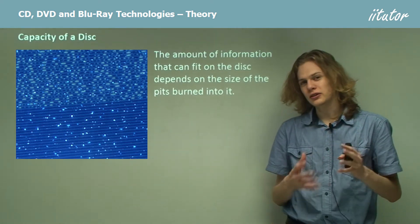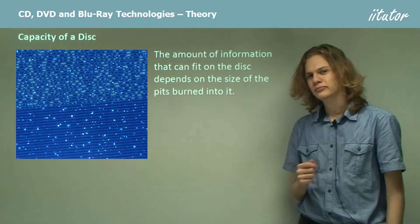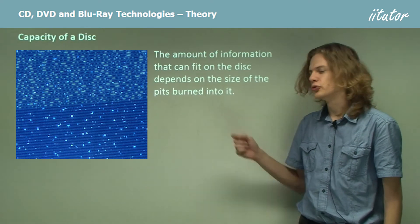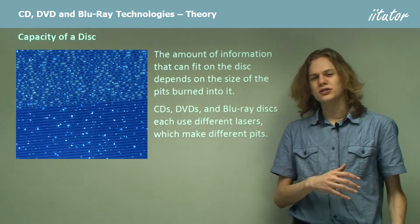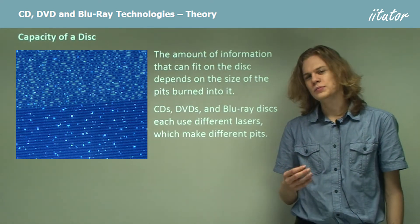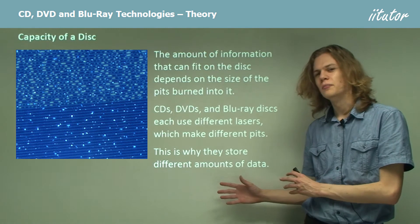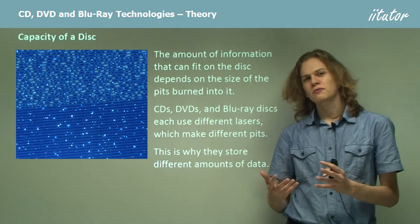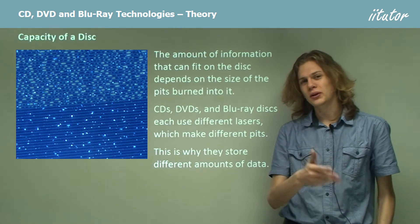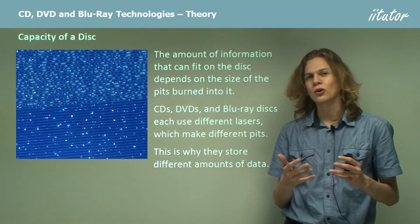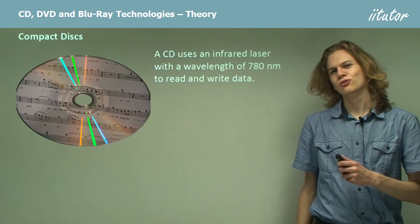The amount of data that we can fit onto a disk depends on the number of pits and not-pits we can have on it. We have a close-up of a CD over here and we can see lots of little dots representing each pit. CDs, DVDs and Blu-ray disks all use a different size for their pits, which means they can fit different amounts of pits on each disk — and this is why they store different amounts of data. If we have a large amount of data, we need a large number of ones and zeros, meaning a large number of pits and not-pits, which we might not be able to fit onto a single disk if the pits are very large.